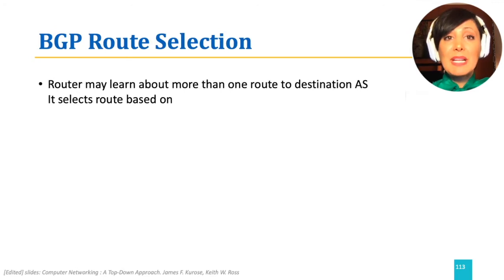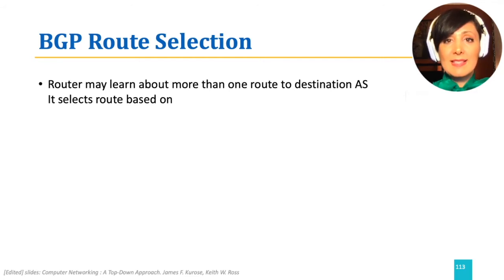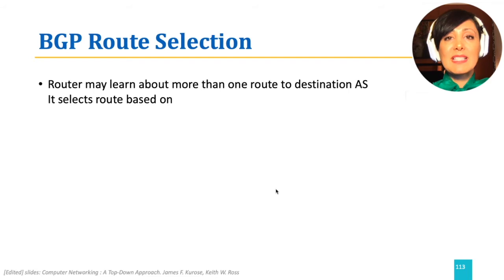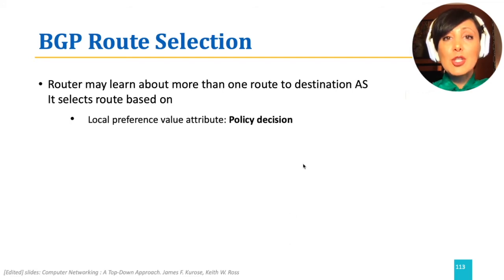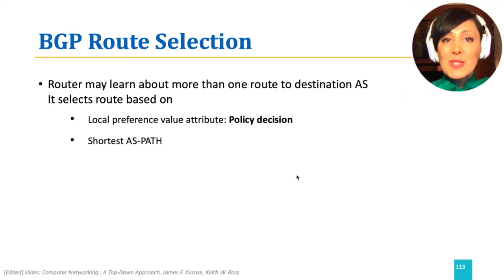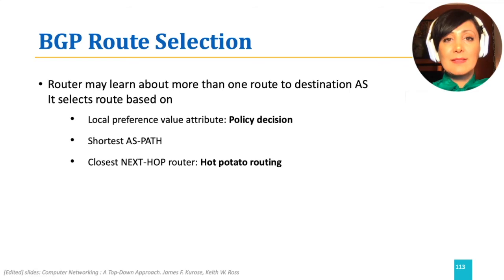Note that a router may learn about more than one route to a destination AS. As we saw in the previous example, AS1 learns about different paths to x through AS2, AS3, x, or only AS3, x. The router may select a route among the ones it learns in different ways based on attributes: local preference value (a policy decision), the vector with the lowest number of ASs in the path vector, or the closest next hop router — called hot potato routing — or a combination of parameters.